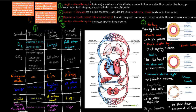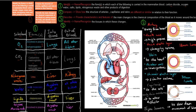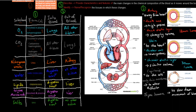The next dot point says 'identify' the forms in which each of the following is carried in mammalian blood: carbon dioxide, oxygen, water, salts, lipids, nitrogenous waste, and other products of digestion. Oxygen is carried as dissolved plasma or oxyhaemoglobin — two forms. Carbon dioxide can be dissolved in plasma, travel as carboxyhaemoglobin, or as hydrogen and bicarbonate ions — three forms. Nitrogenous waste travels as urea. Water travels as water molecules. Lipids travel as chylomicrons in protein. Glucose and amino acids travel dissolved in plasma. Salts travel as ions.